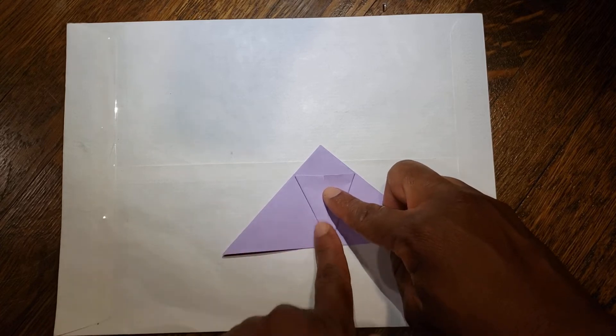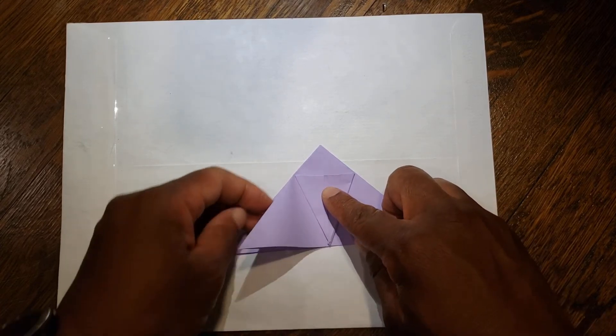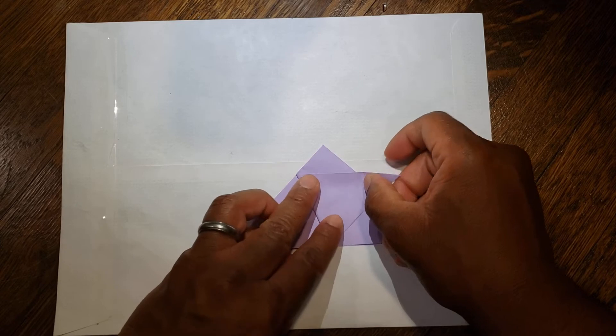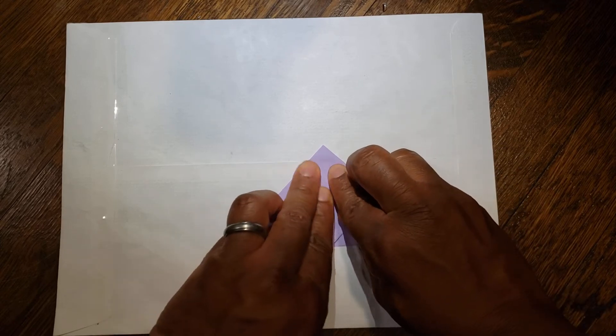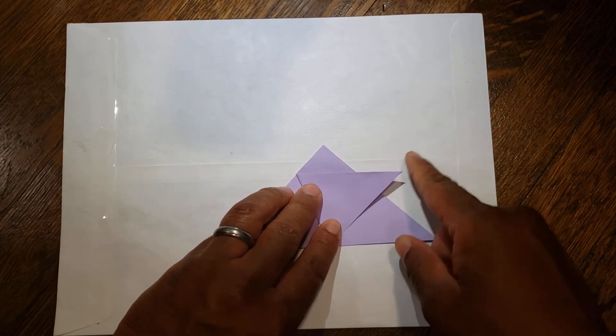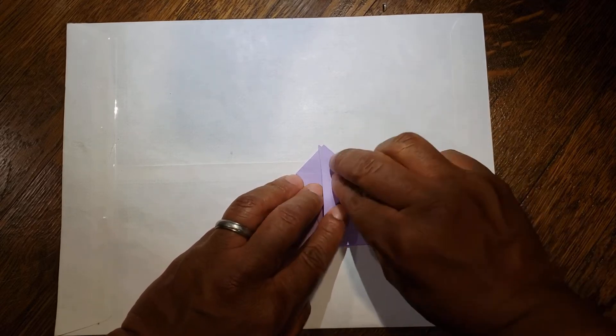Now using this diagonal as a guide, take the left flap and fold it over. Take this point and bring it to the top.